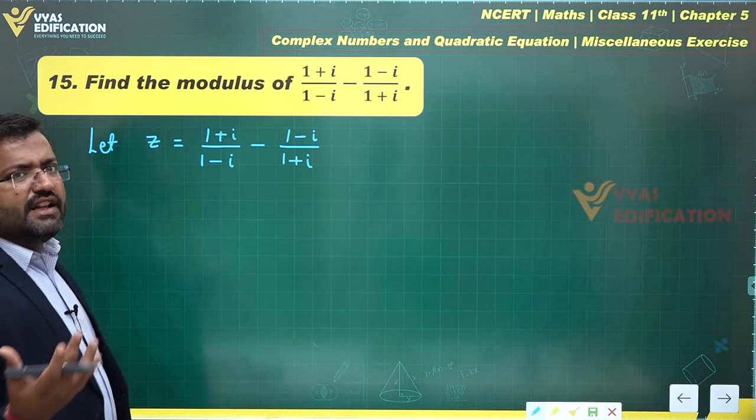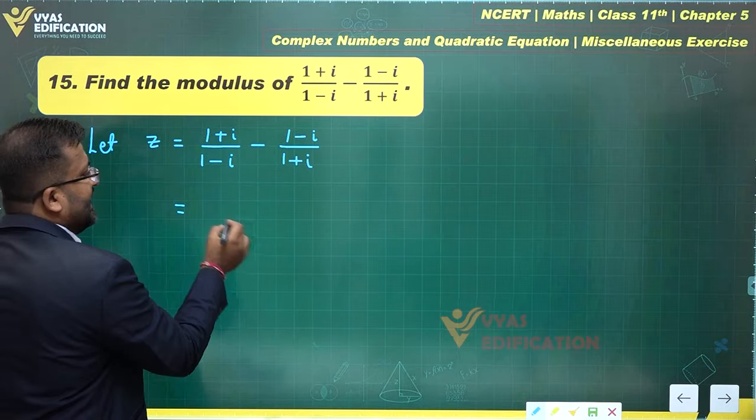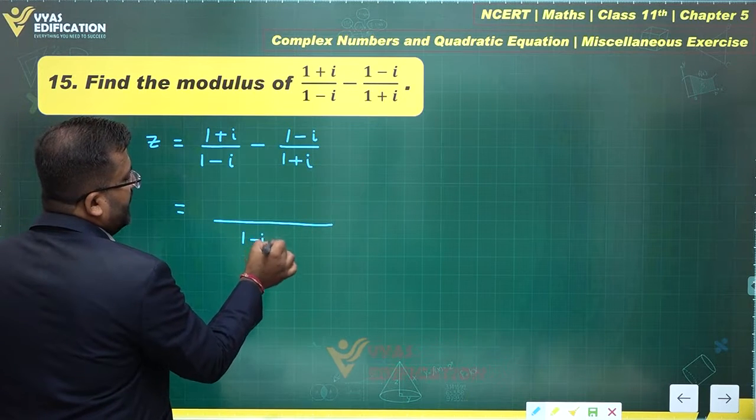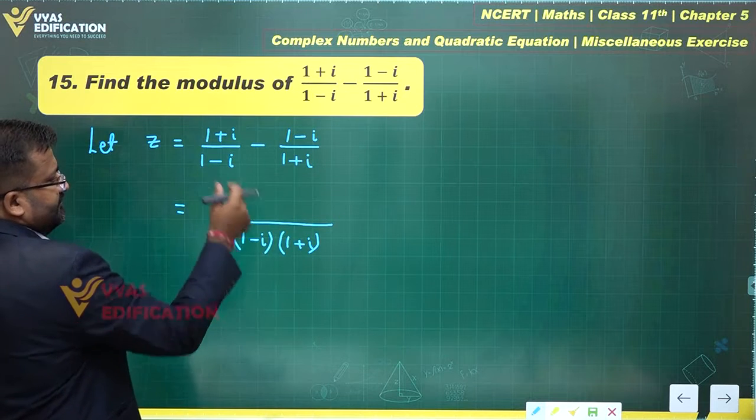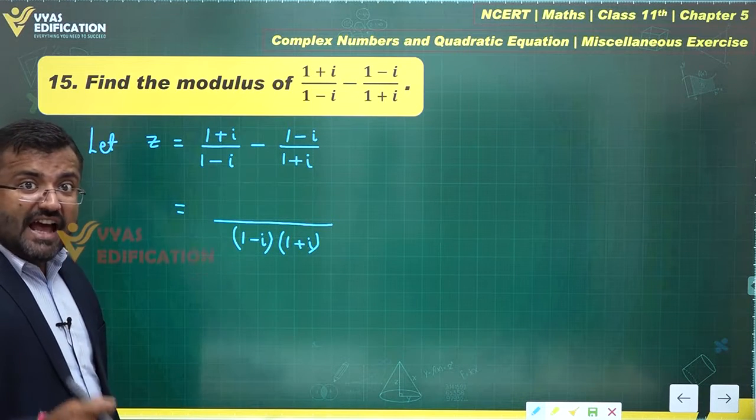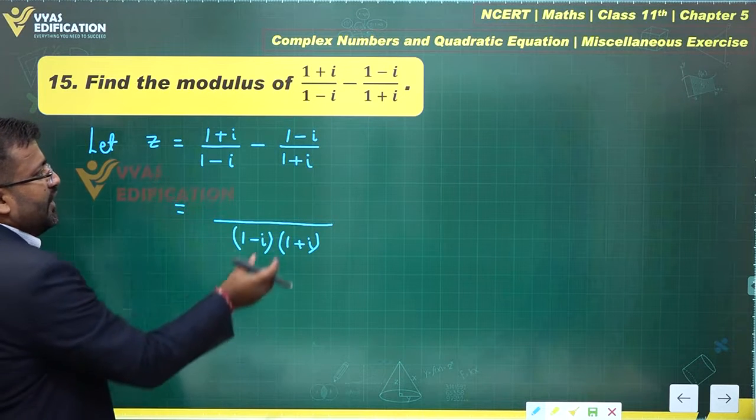What do I have here is (1-i) times (1+i) in the denominator. This is the LCM. Is it actually LCM? No, it is not actually LCM, it is a way of simplifying, that is adding these fraction terms.